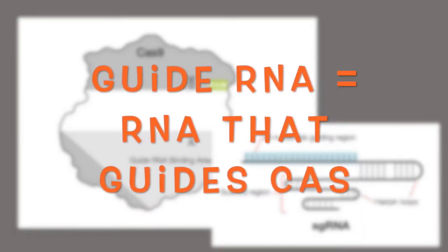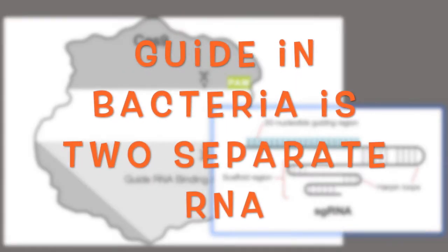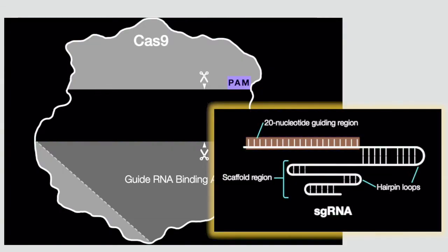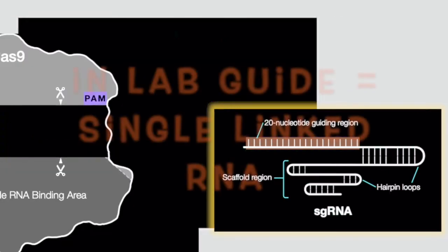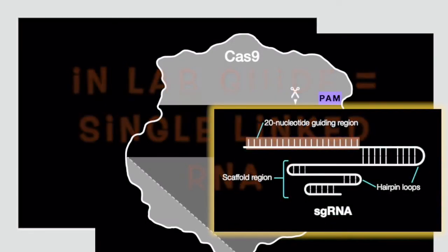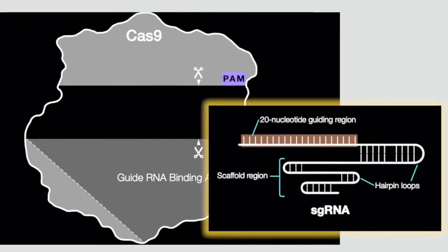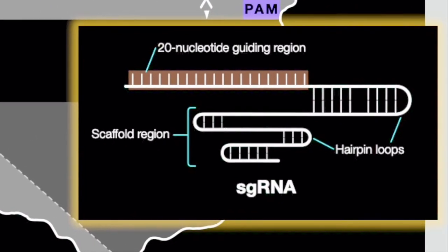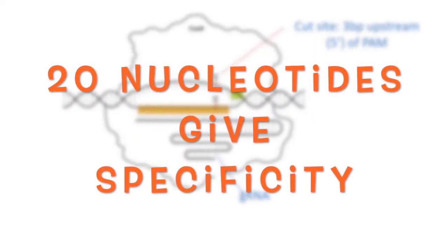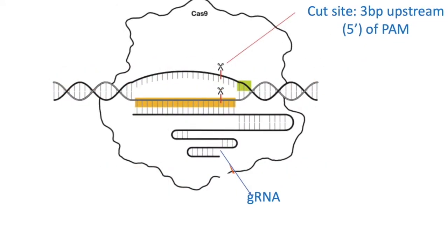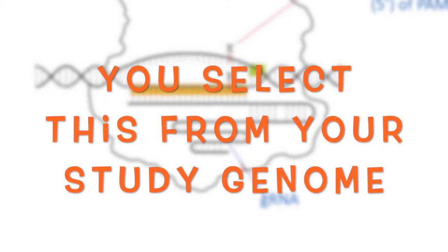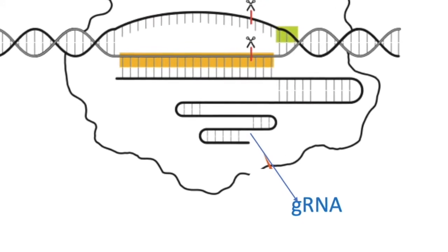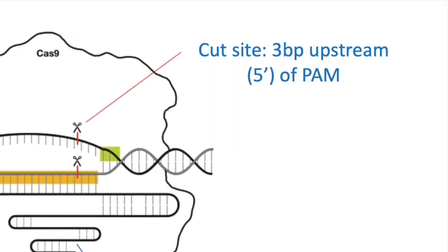The guide RNA is the RNA used in bacterial adaptive responses, adapted for use in genome editing. In bacteria it's a two-RNA component, but in the lab it's combined into a single guide RNA of about 100 base pairs that directs Cas9. Cas9 binds to the guide RNA, which in turn binds one strand of double-stranded DNA. The first 20 to 21 base pairs give it specificity, letting you program which DNA segment to target. Cas9 then cuts three base pairs from that sequence.